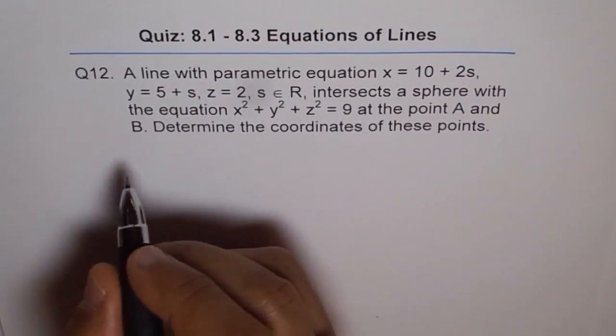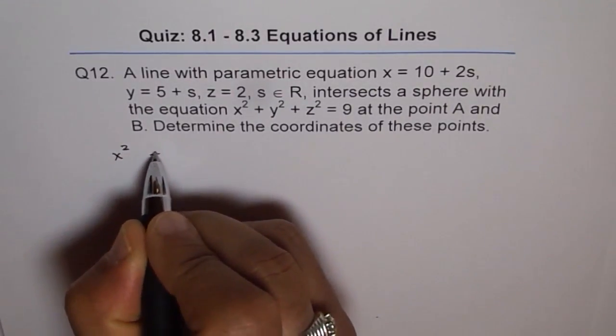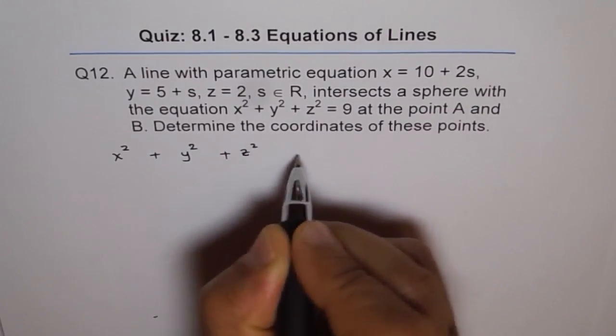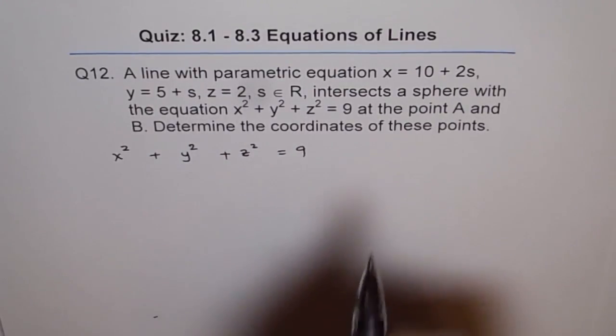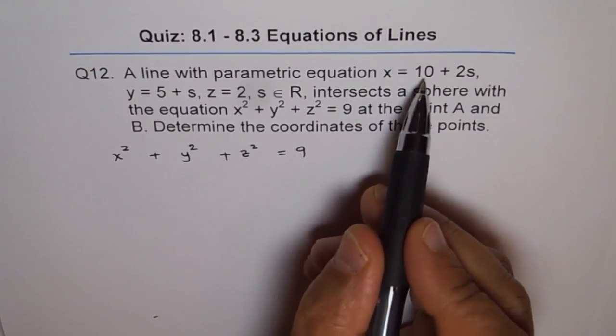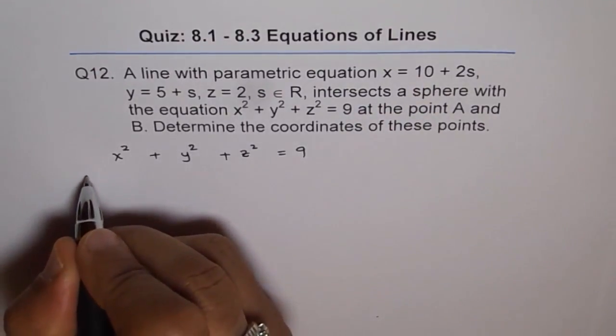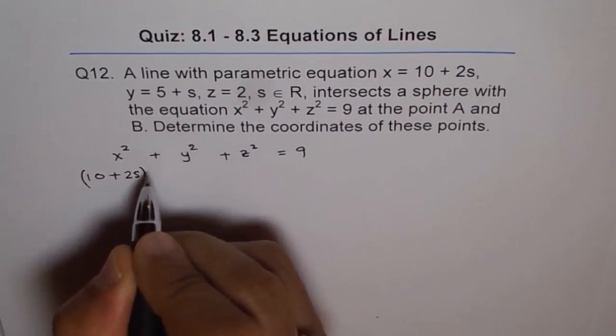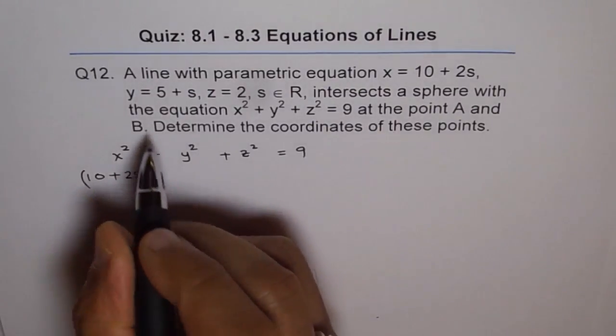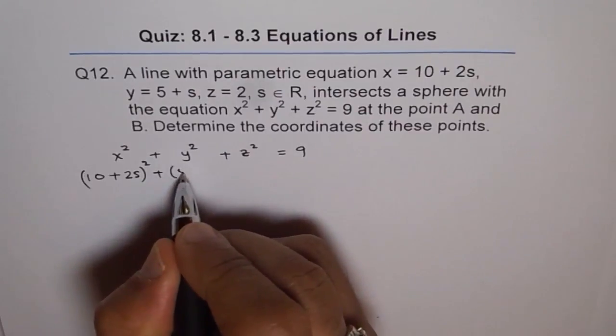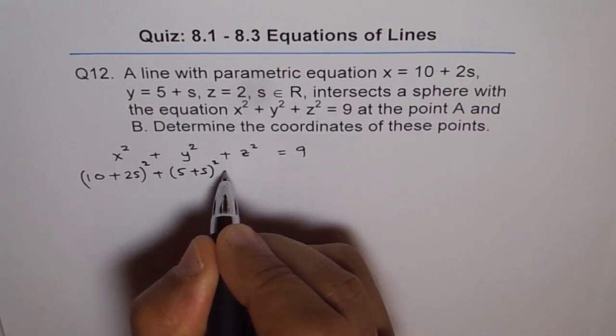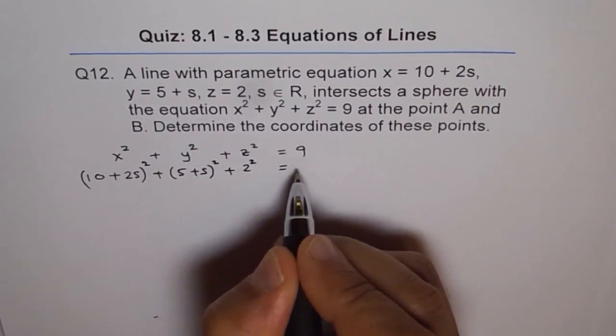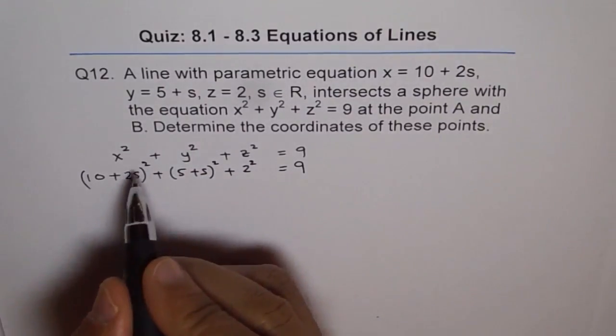So x square, we will write the equation as x square plus y square plus z square equals 9. Instead of x, we will write 10 plus 2s whole square plus y is 5 plus s, 5 plus s whole square plus z is 2 square. So we will write 2 square equals 9. Now let's expand.